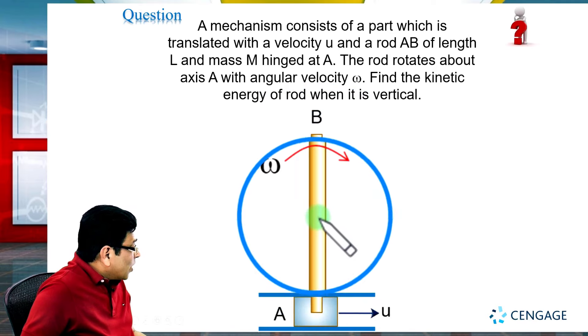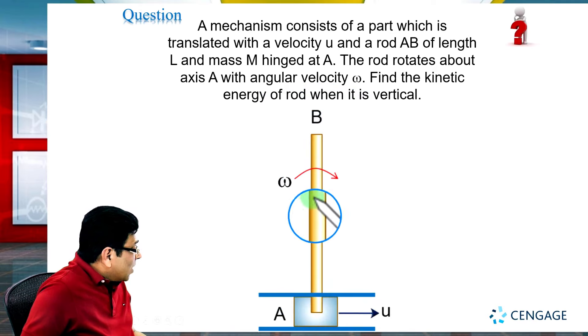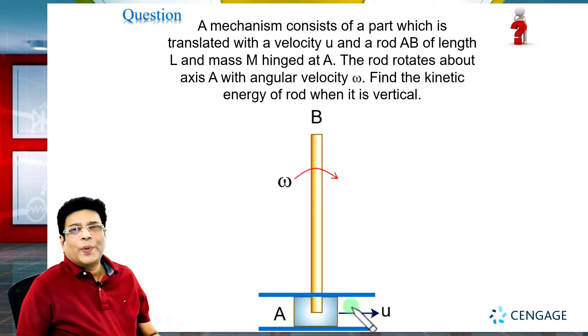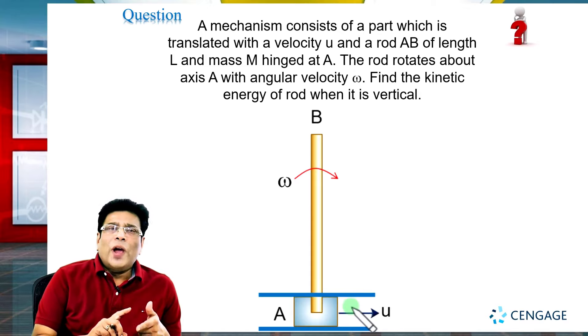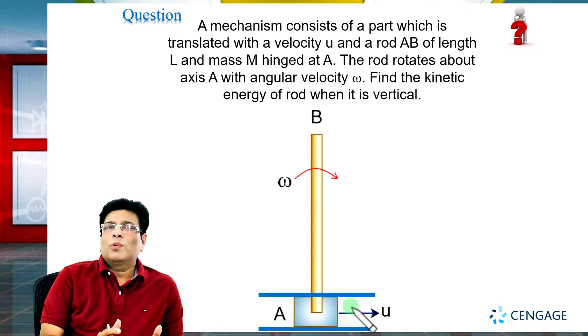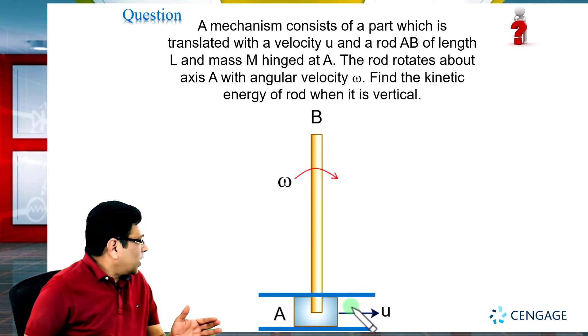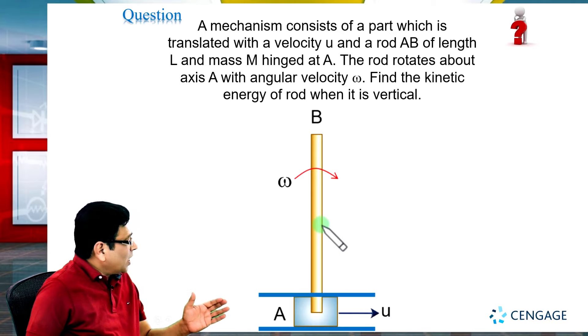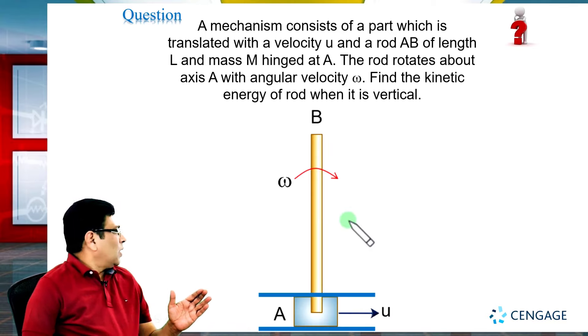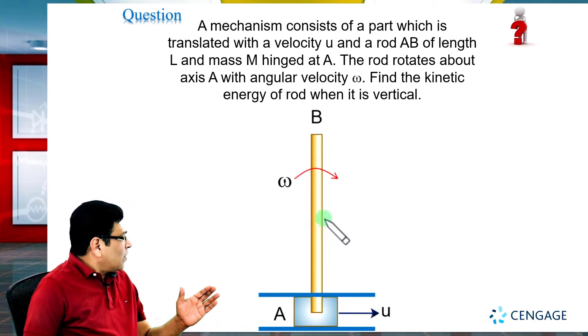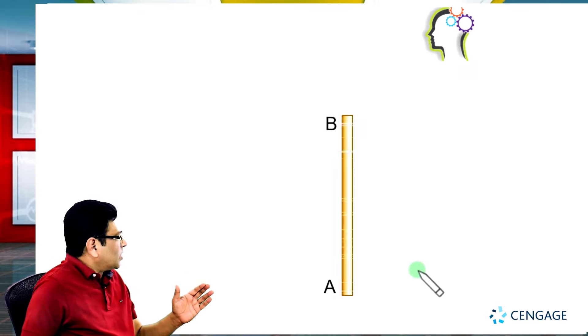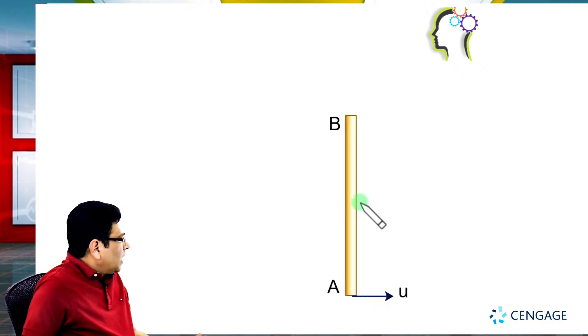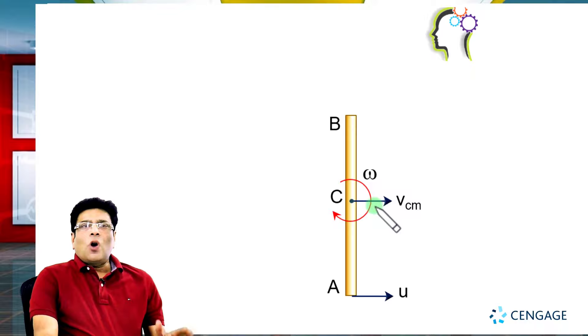That means the angular velocity of the rod about the centroidal axis will also be omega, because for a rigid body the angular parameters are the same. If it is rotating about the lowest point with angular velocity omega, then about the center of mass the angular velocity will also be omega. Let us assume the linear velocity of the center of mass is vcm. Let us make the diagram of the situation. This is u, this is vcm, and this angular velocity is omega.